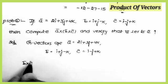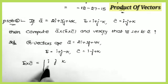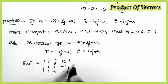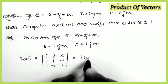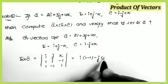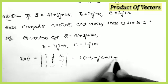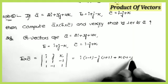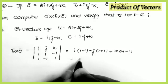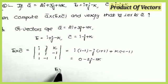First we want b×c. Setting up i, j, k with b = (1, 1, −1) and c = (1, −1, 1). i component: (1×1 − (−1)×(−1)) = 1 − 1 = 0; −j(1×1 − (−1)×1) = −(1+1) = −2; k((1)(−1) − (1)(1)) = −2. Therefore b×c = −2j − 2k.